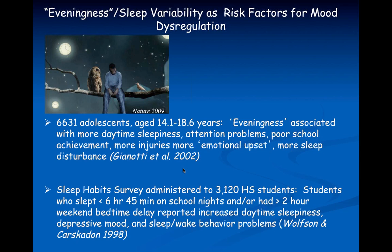Eveningness — being a night owl — is a risk factor for sleep dysregulation. This is a natural pattern of sleep behavior, but there's variability: some people are larks and some are night owls. In a large study of over 6,000 adolescents, eveningness was associated with more daytime sleepiness, attention problems, poor school achievement, more injuries, emotional upset, and sleep disturbance. Part of this is a mismatch between one's natural daily rhythm and societal constraints — kids have to wake up early for school.